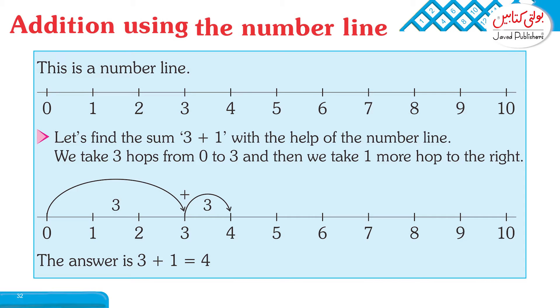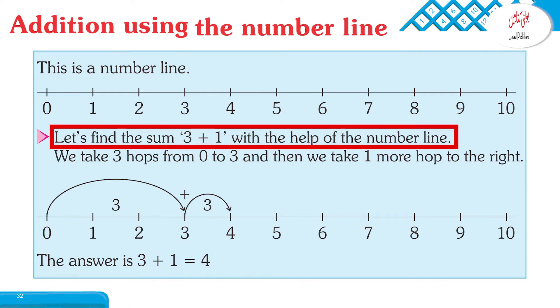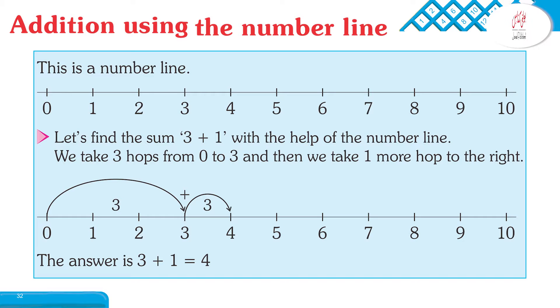After that, the question is: let's find the sum 3 plus 1 with the help of the number line. We take 3 hops from 0 to 3, and then we take 1 more hop to the right.